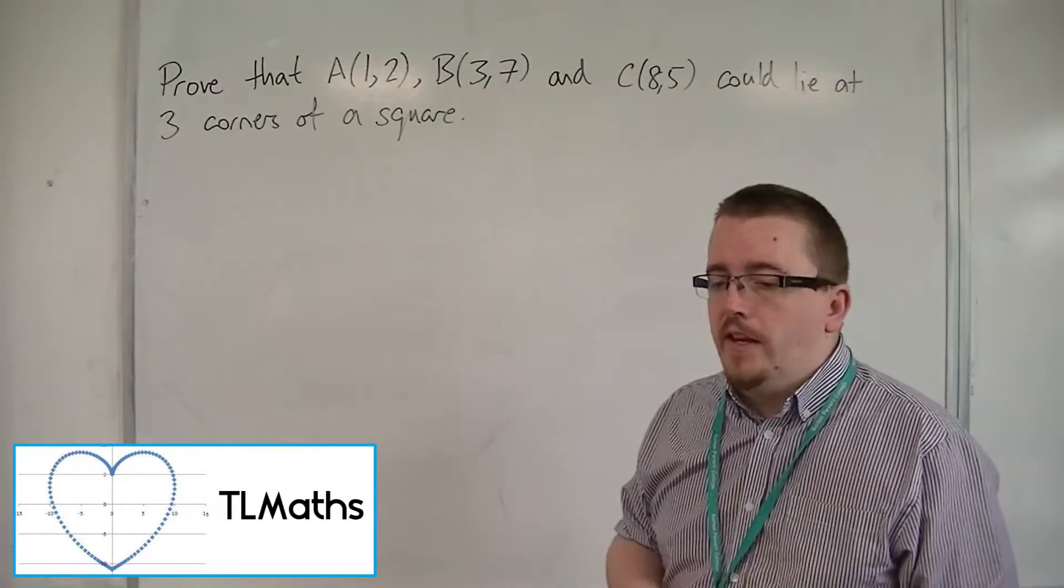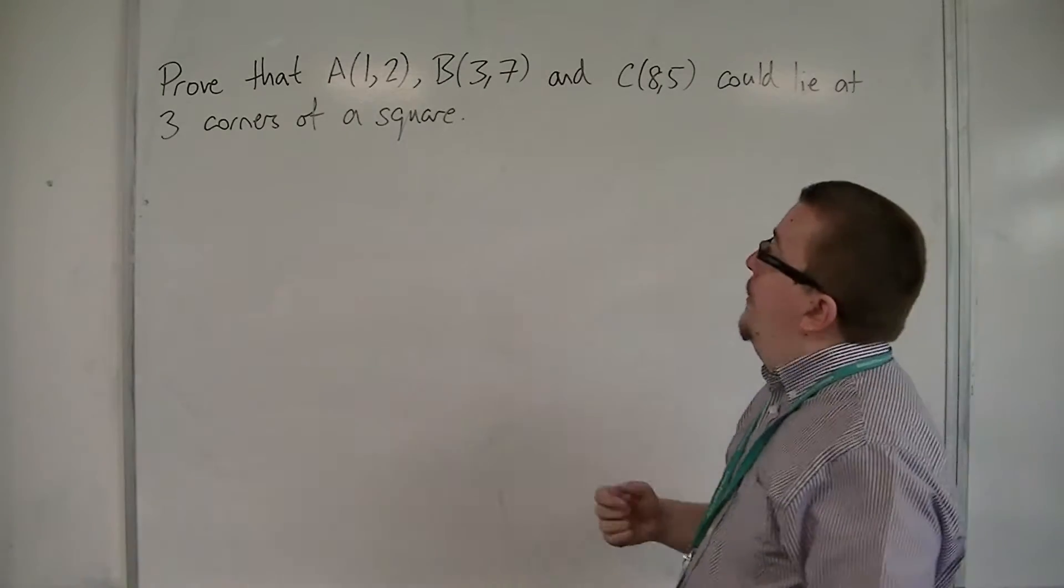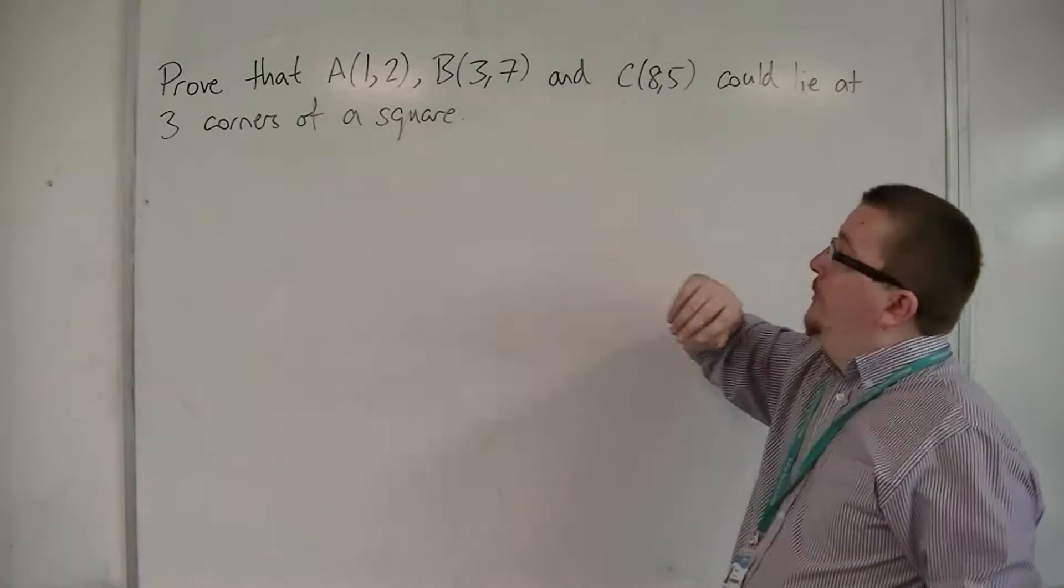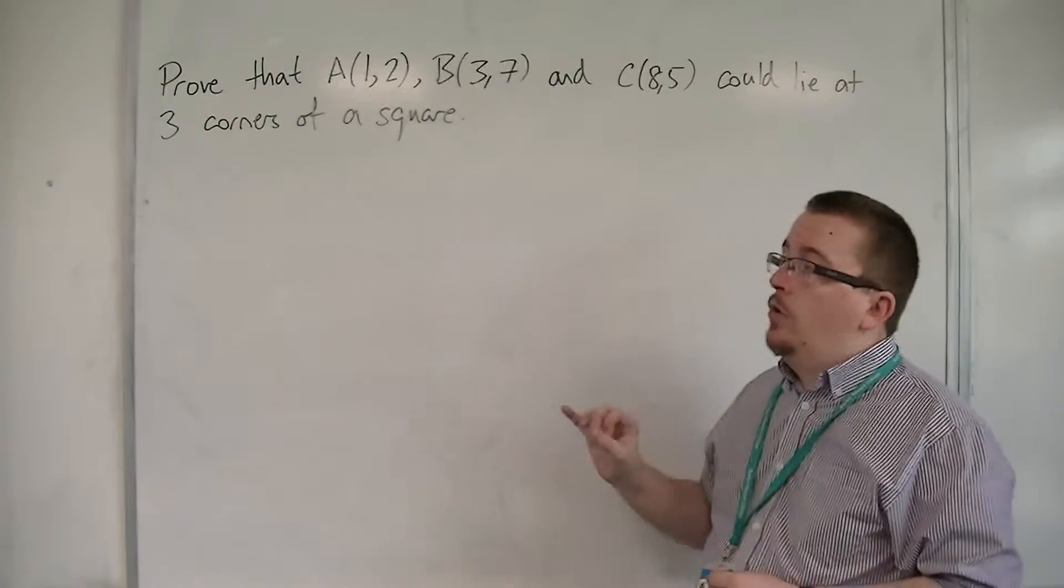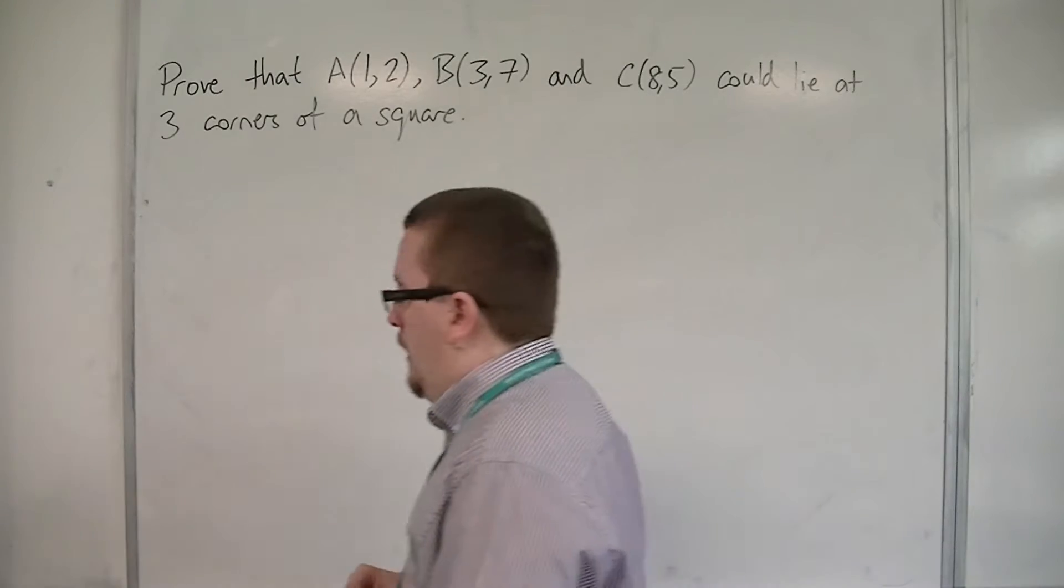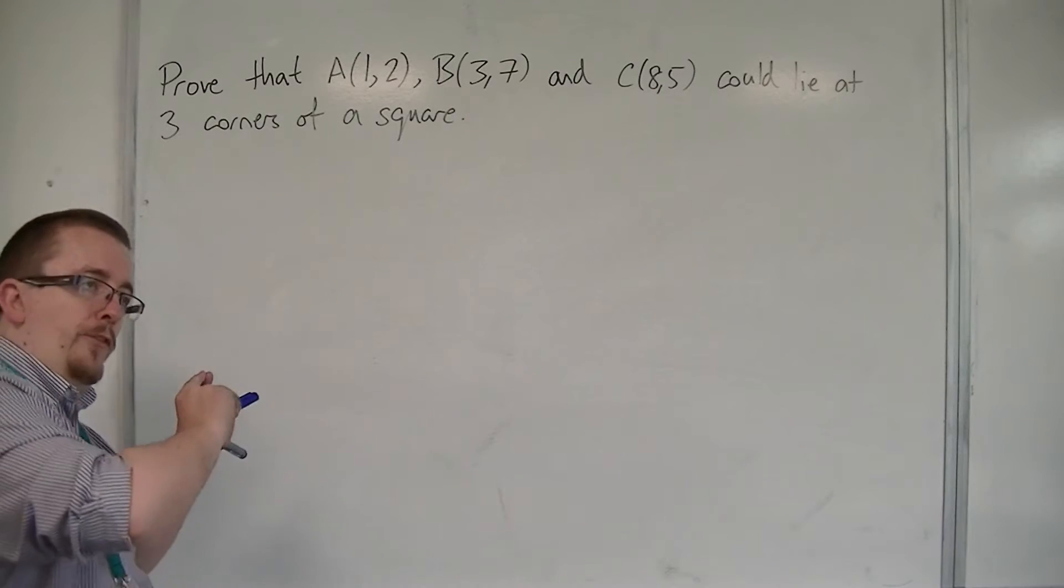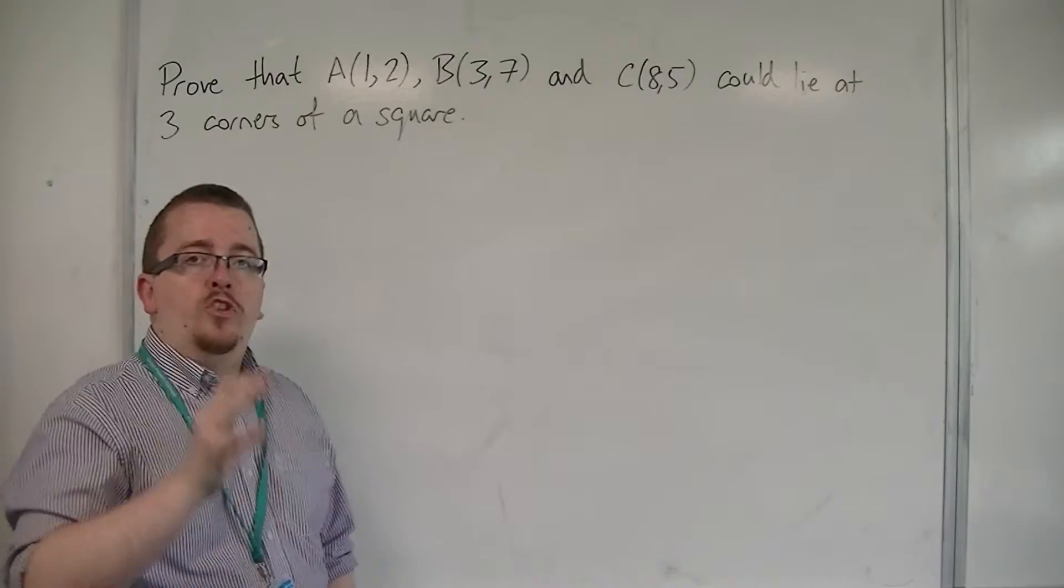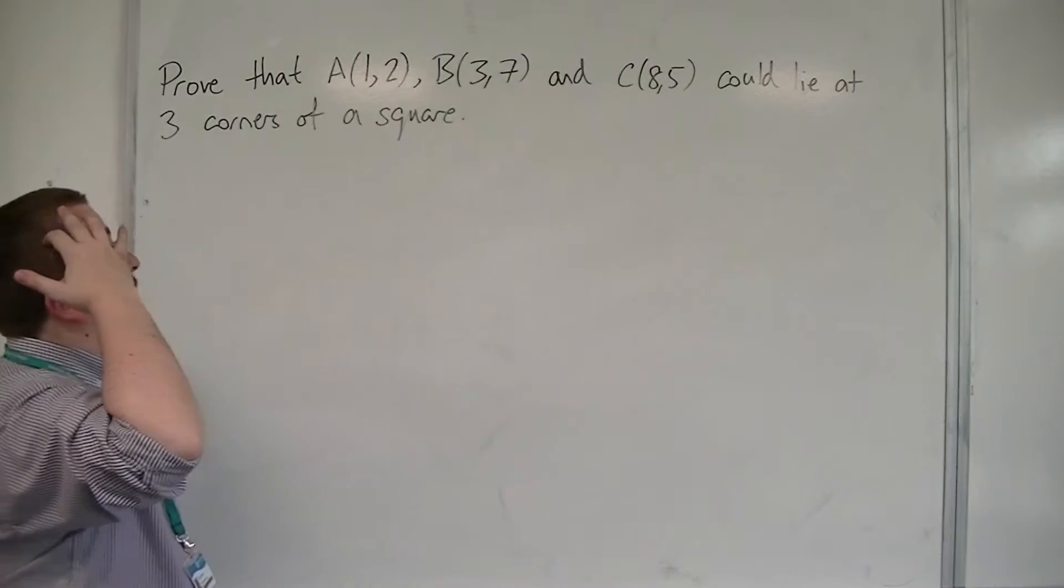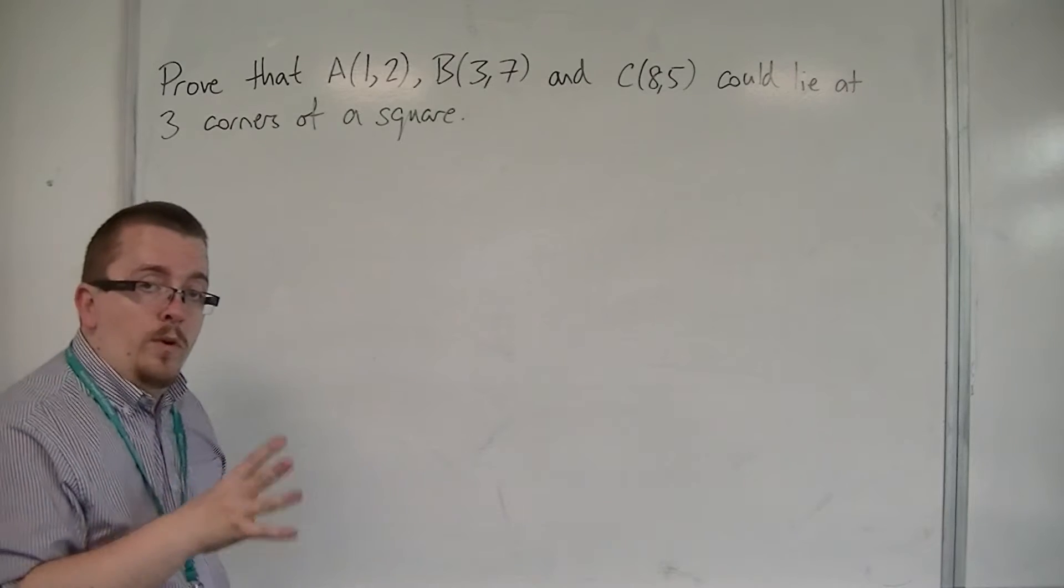In this video we're going to be looking at a particular problem where we've got to prove that A at 1, 2, B at 3, 7, C at 8, 5, so three coordinates, could lie at three corners of a square. So, not only do we have to show that the three points form a right angle, but we've also got to show that those two sides that we're considering are equal in length.